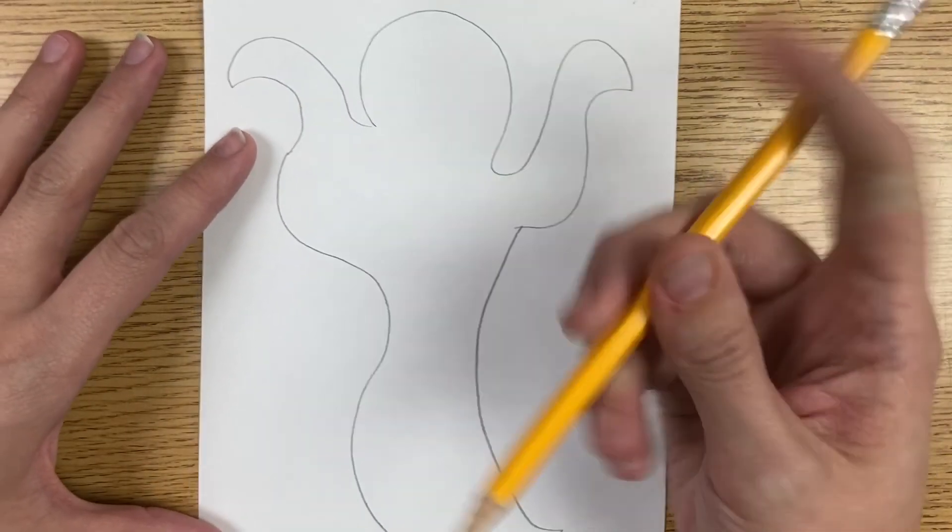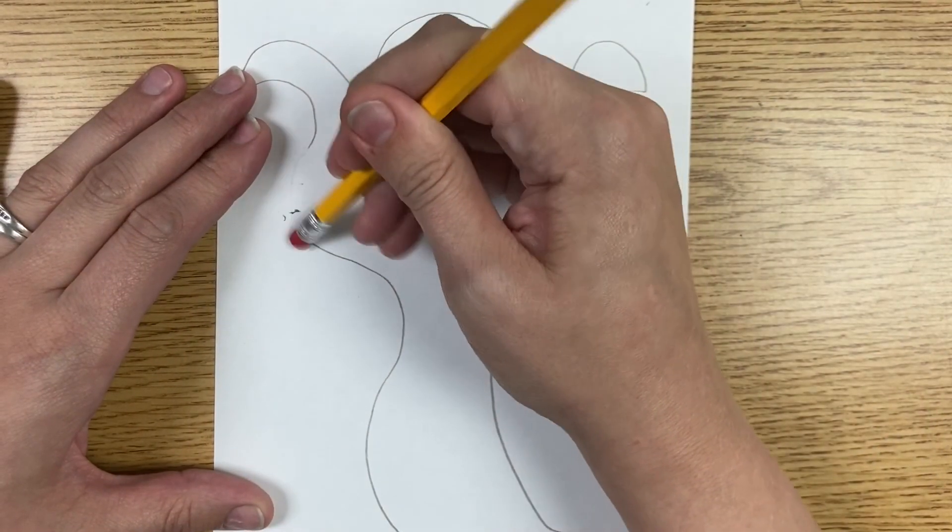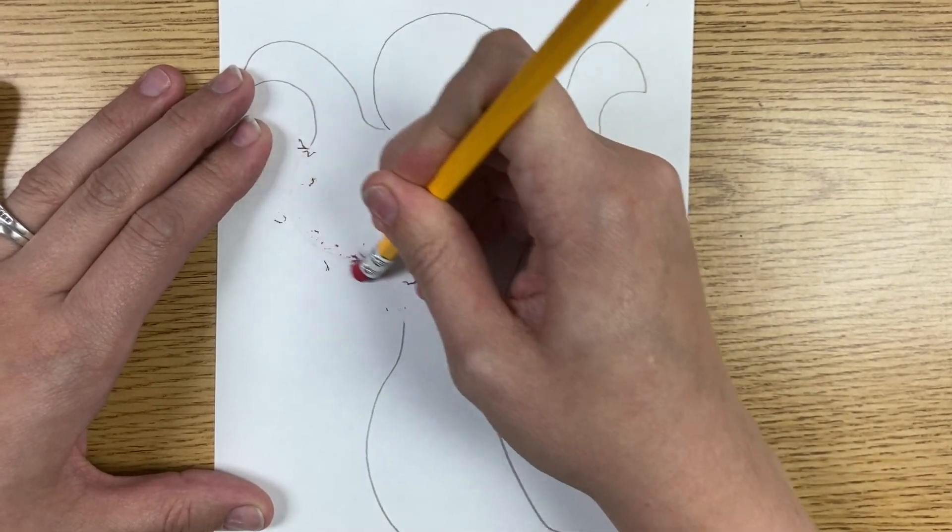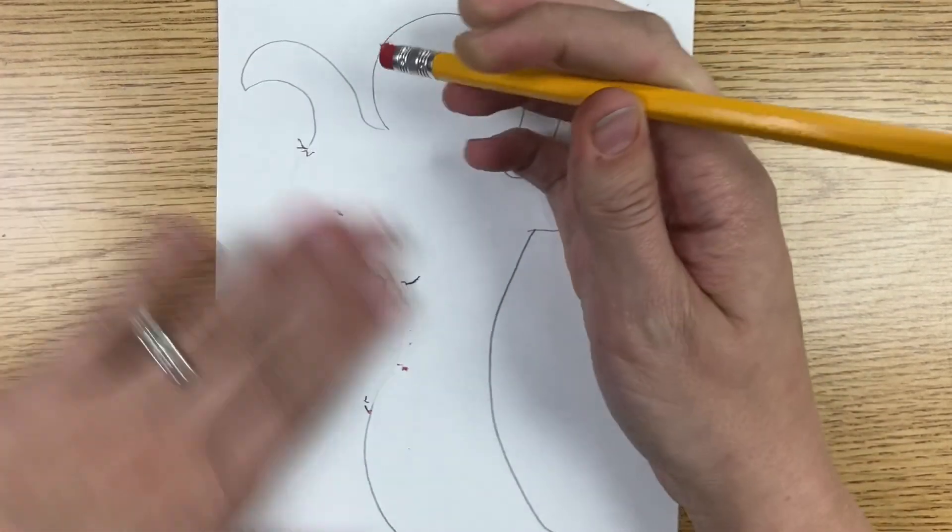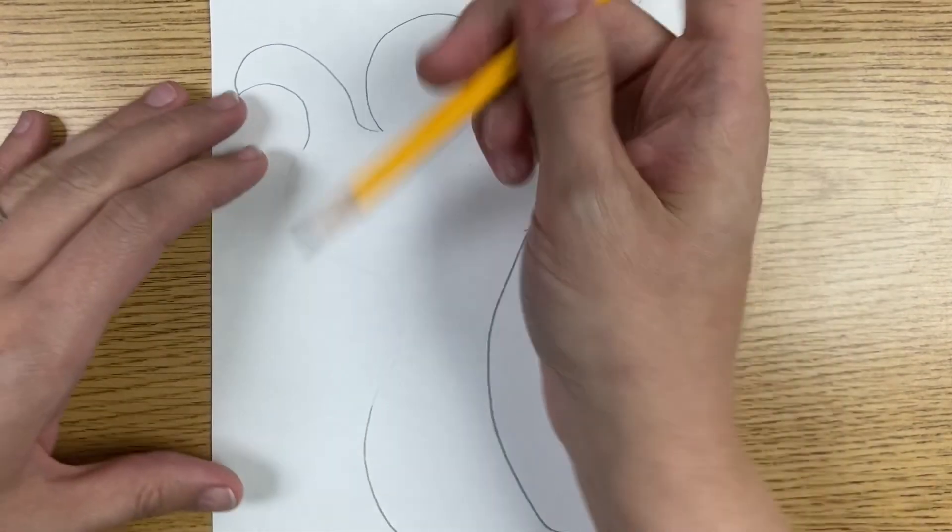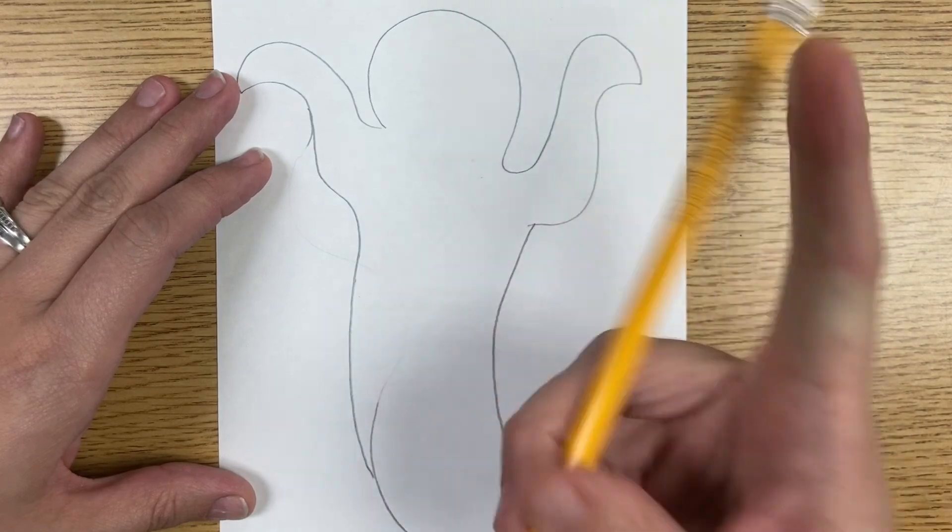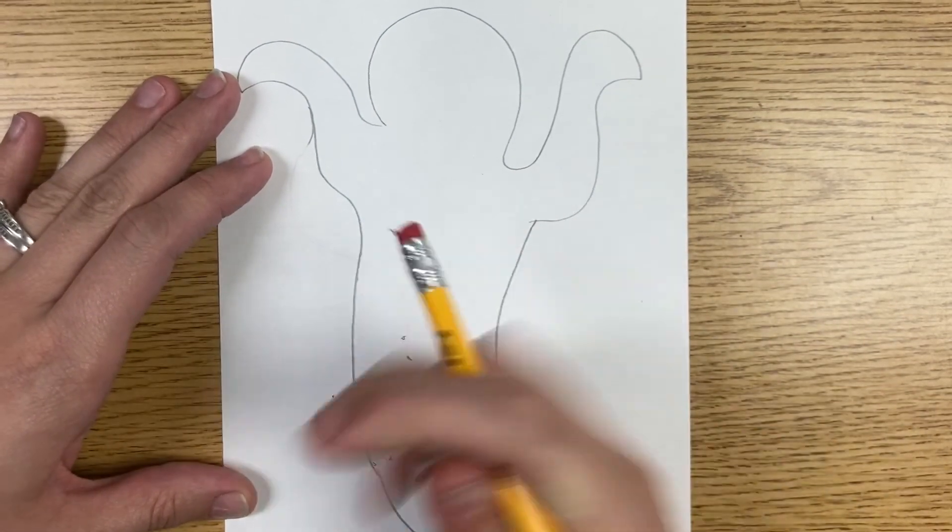And I made him kind of skinny right here. I don't like the way that turned out, so I'm going to go back and I'm going to fix it. If you make a mistake, that's okay. You're just going to go back and fix it. Make sure you draw light in case you need to do that because sometimes we make mistakes. So I'm going to go back, and I'm going to make him a little bit wider at the bottom like this, okay?